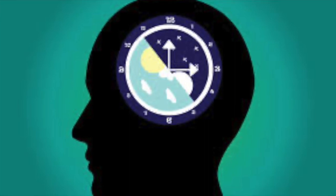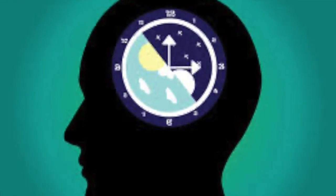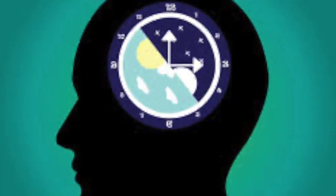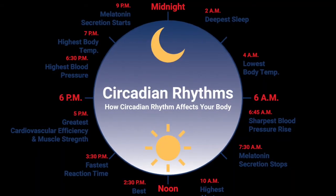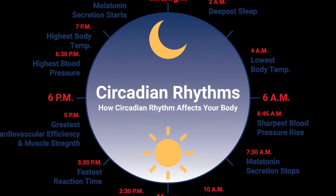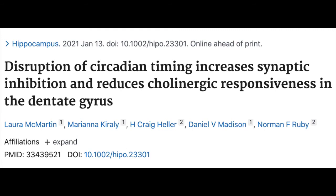Hello and welcome to MC Squared. On this podcast, you can enjoy deep discussions and interviews about everything science with the best minds in the field. I'm Sanjum Sanghari, and this episode's topic will be a recent research paper studying the effects of disrupting the circadian rhythm. With me today is Dr. Norman F. Ruby, a senior research scientist at Stanford University and one of the main authors of the research study. Welcome, Dr. Ruby. Thank you for appearing on the podcast — it's an honor to have you here.